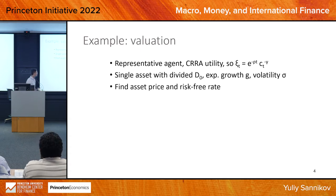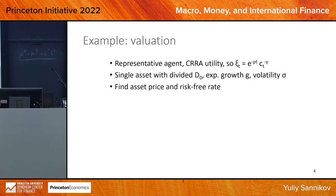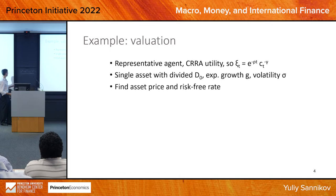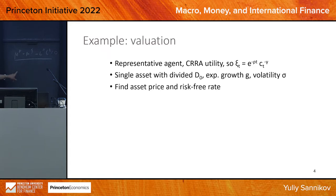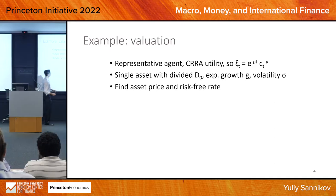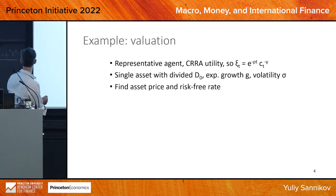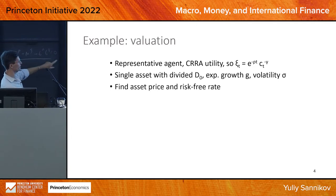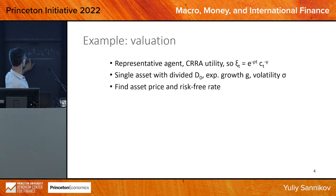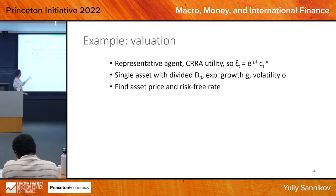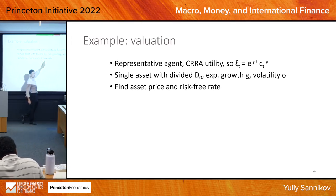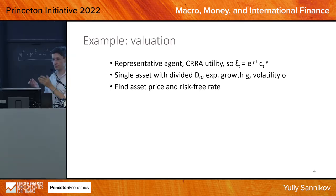Now let's talk about it. We have to put things into the formula: the expected return on this asset is the capital gains rate G plus the dividend yield (dividend rate divided by price, which is the unknown). Consumption equals the dividends, so we have the process for consumption. Then we want the process for marginal utility, which we find using Itô's formula.